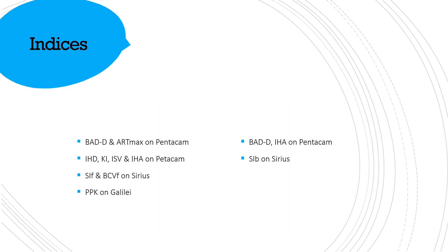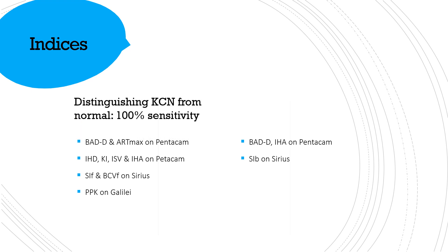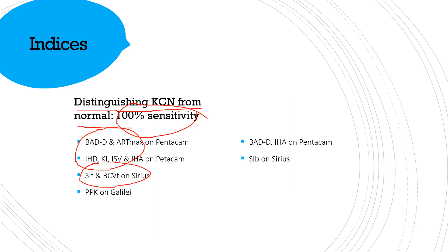Some of the indices have 100% sensitivity for distinguishing keratoconus from normal — these are very important. They are BAD, D, Artmax, IHD, and IHA on the Pentacam, and SIF and BCVF on the Cirrus, and PPK on the Galilei. They have 100% sensitivity for distinguishing keratoconus.